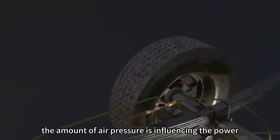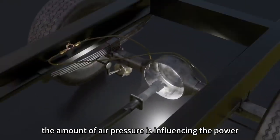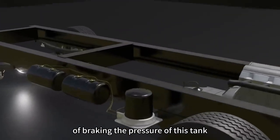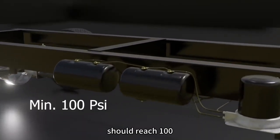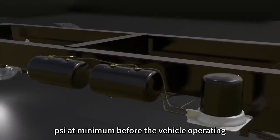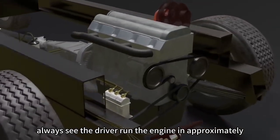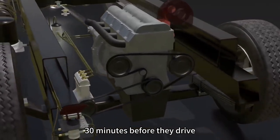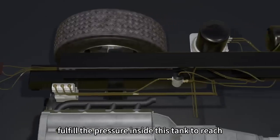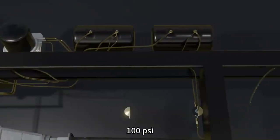On air brake system, the amount of air pressure is influencing the power of braking. The pressure of this tank should reach 100 psi at minimum before the vehicle operating. That's why we always see the driver run the engine in approximately 30 minutes before they drive. It aims to fulfill the pressure inside this tank to reach 100 psi.